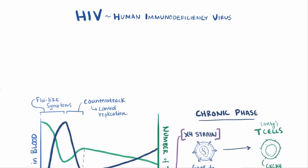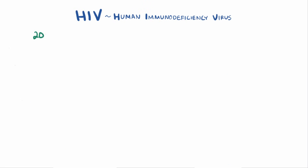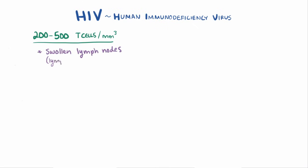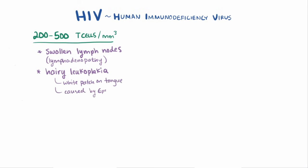When the body's T cells drop to between about 200 and 500 cells per cubic millimeter, patients start experiencing symptoms like swollen lymph nodes or lymphadenopathy, as well as relatively minor infections like oral hairy leukoplakia — a hairy-looking white patch on the side of the tongue caused by the Epstein-Barr virus — as well as oral candidiasis, a yeast infection in the mouth.